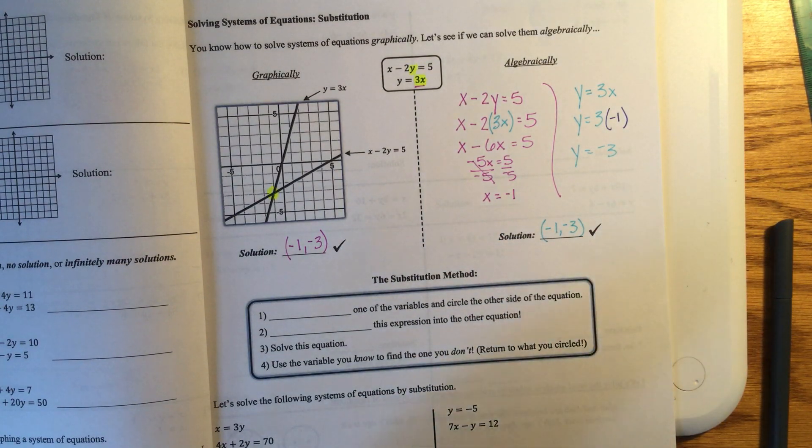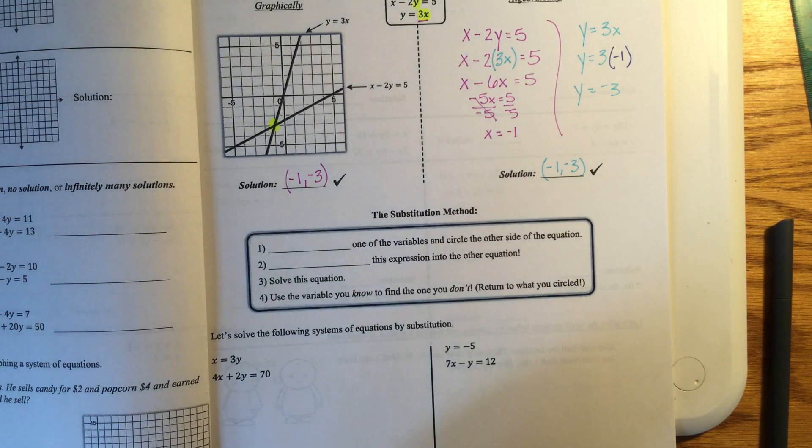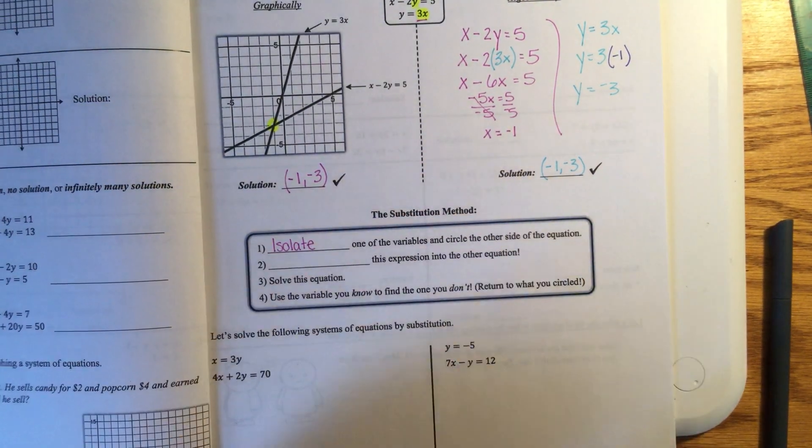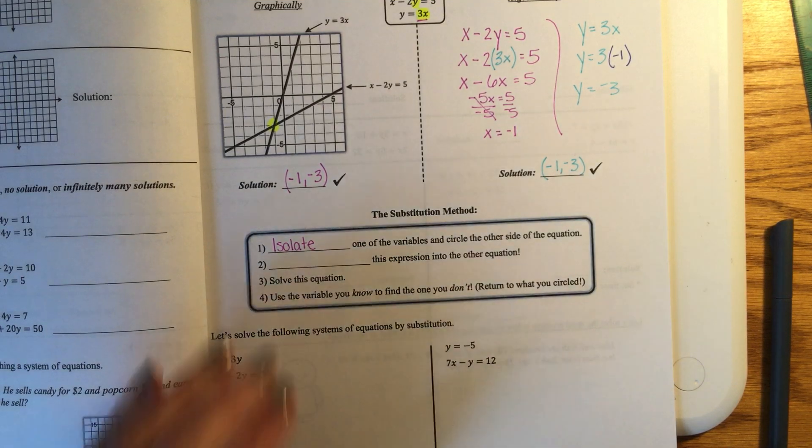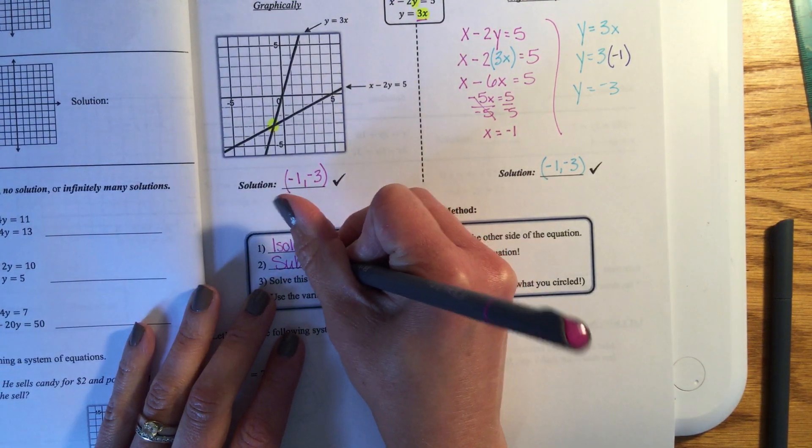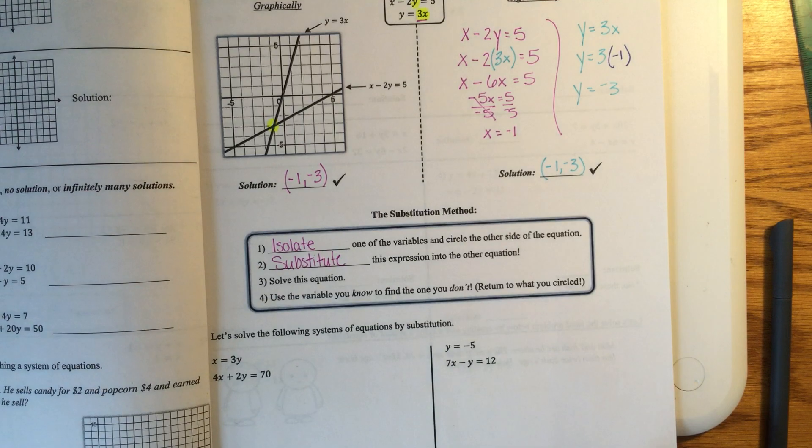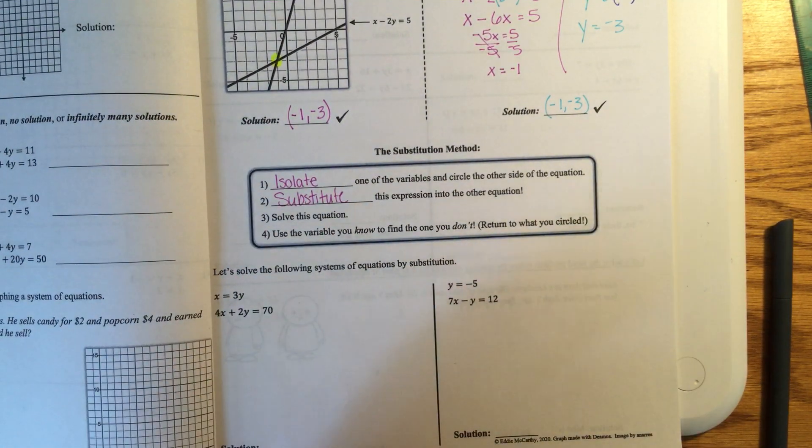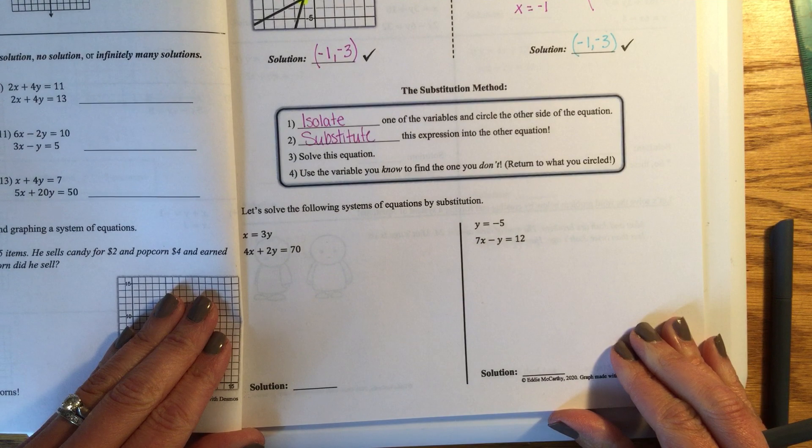So there's a couple of steps that make substitution easier. I know that you guys probably don't understand it after watching one problem and that's okay. So there's a couple of tips I have. And the first thing is that you want to isolate one of the variables and circle the other side of the equation. And this is kind of just, I'll show you what this means. So the next thing is to substitute this expression into the other equation. So then number three, you're going to solve the equation. And then number four, use the variable you know to find the one you don't. So let's solve the next equations.